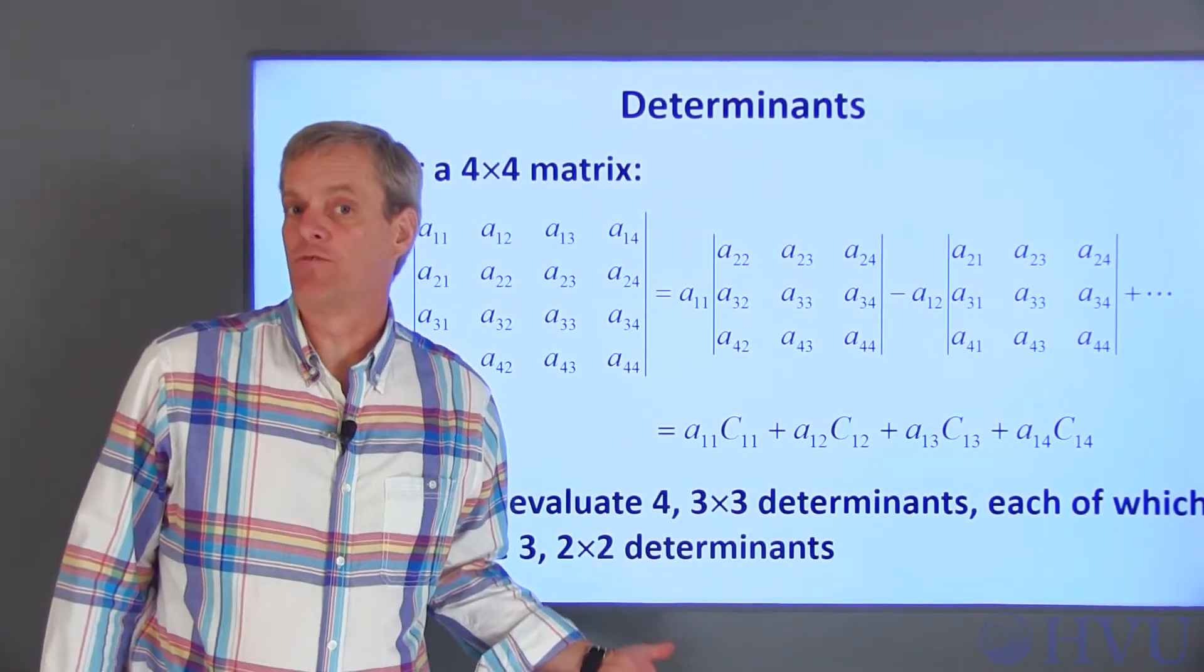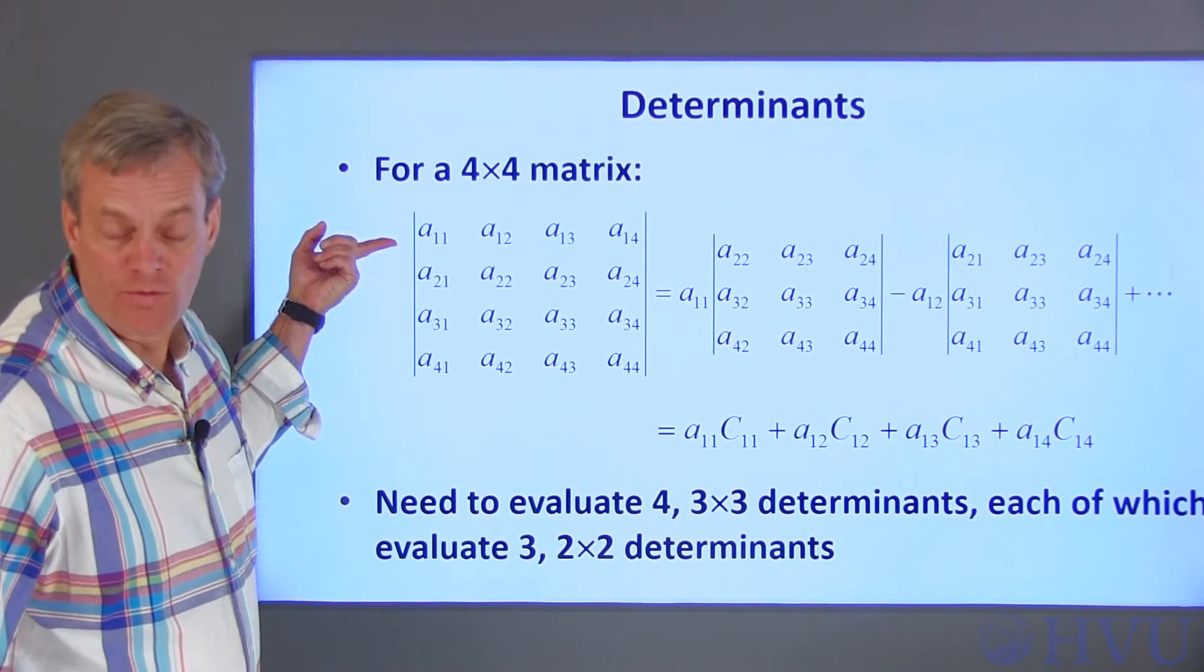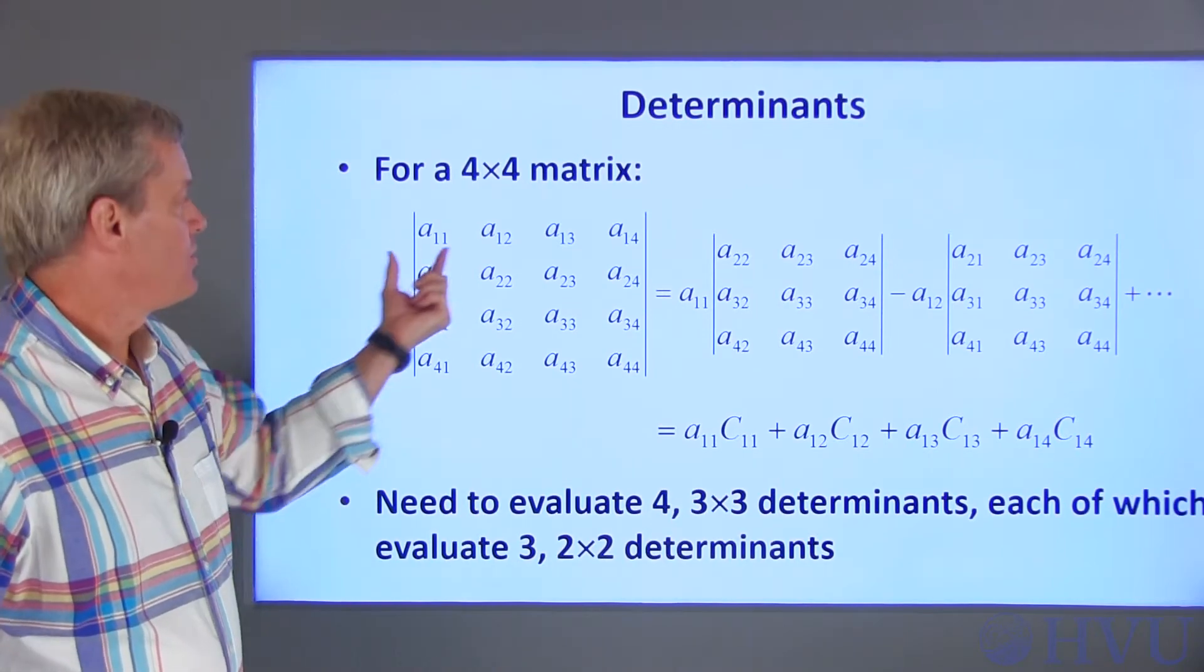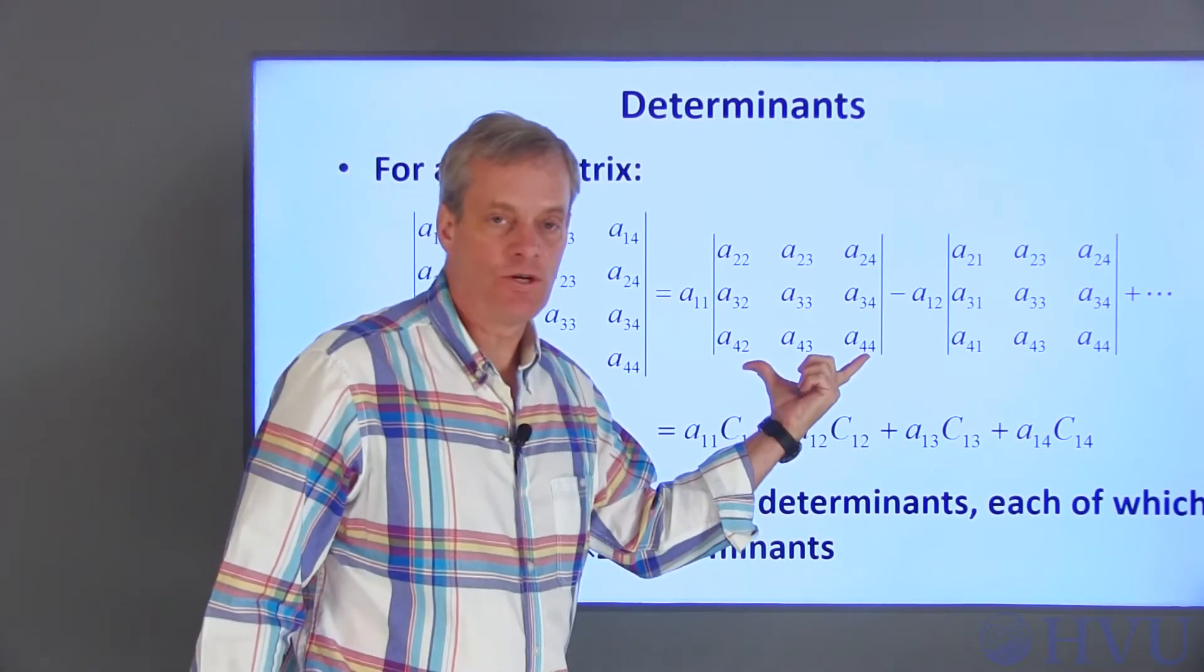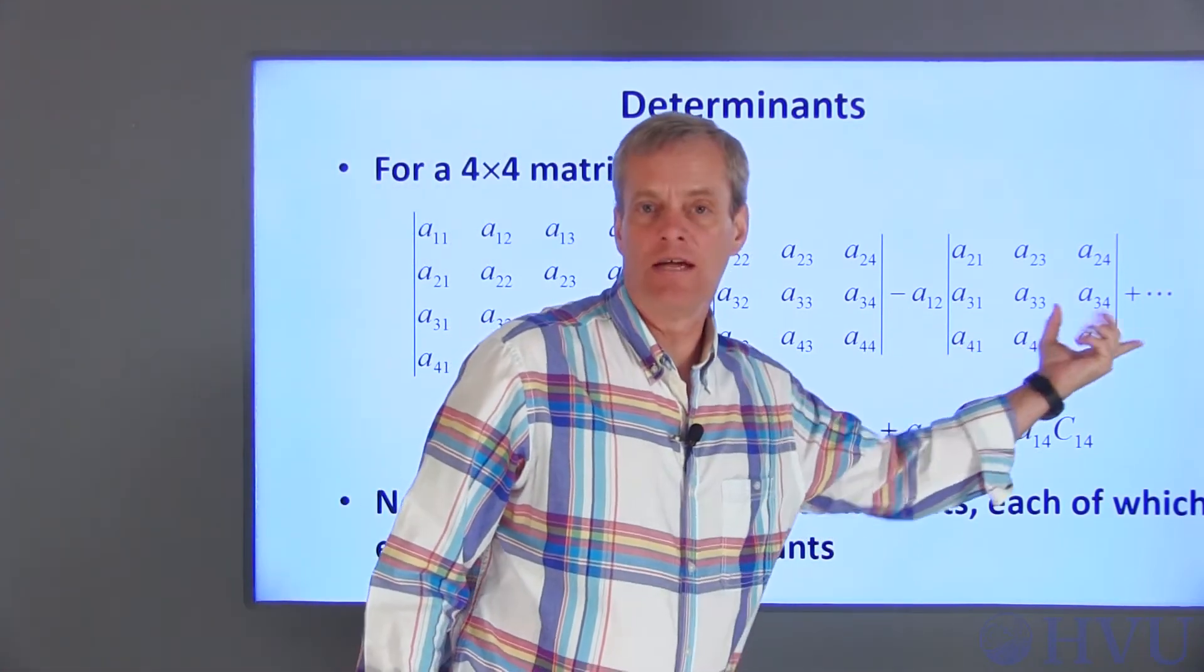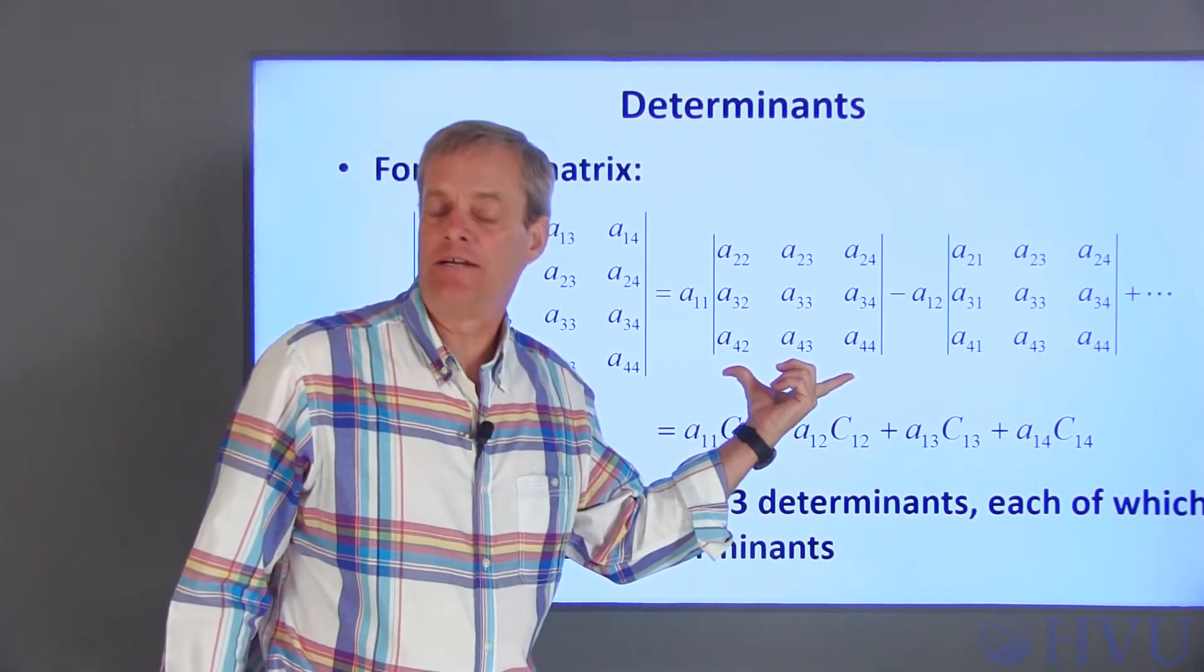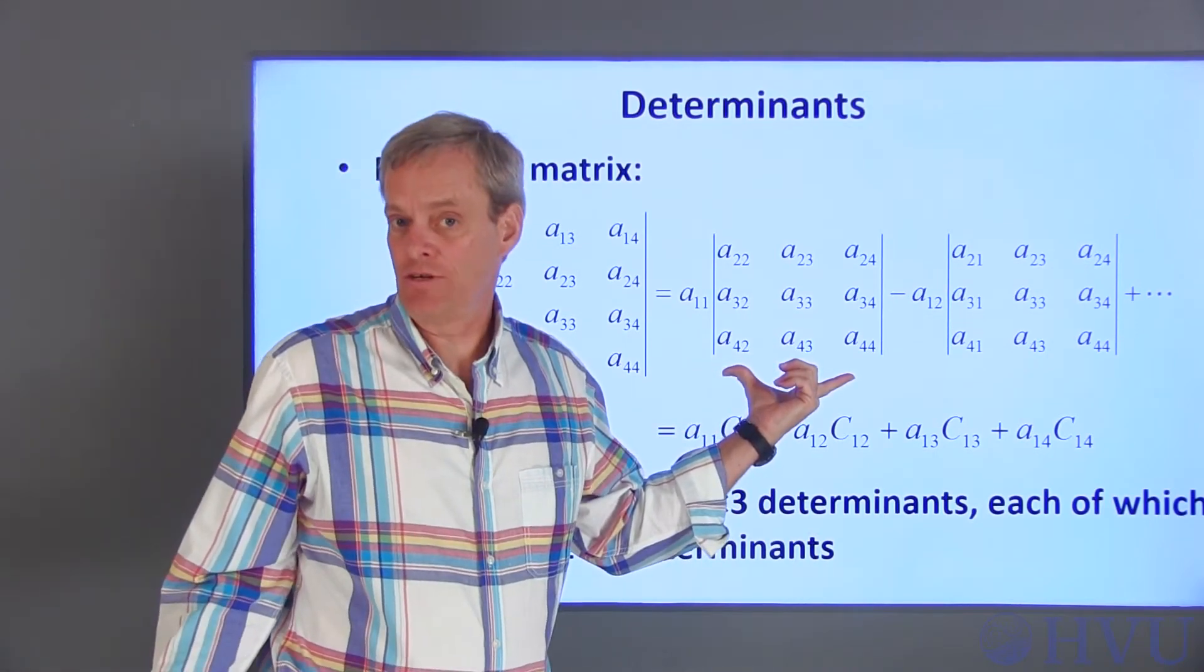The process is the same for a 4x4 matrix. In this example, I'm still working through the first row to create the determinant. The determinant is A11 times its cofactor, minus A12 times its cofactor, and so on. Each of these cofactors is then calculated using the approach for a 3x3 determinant.